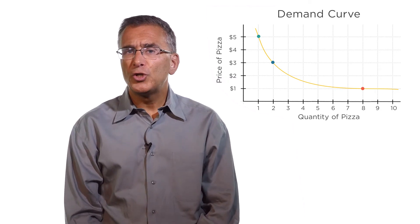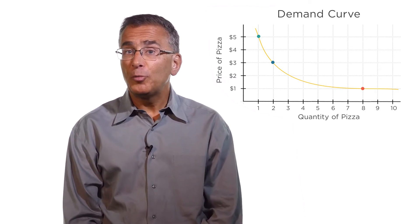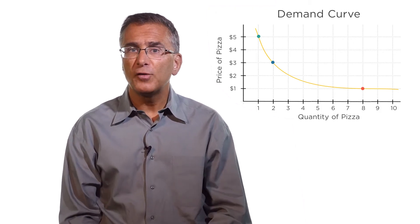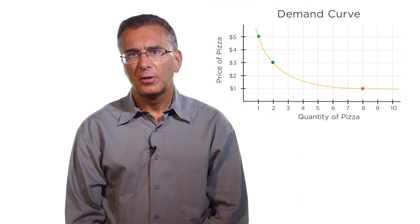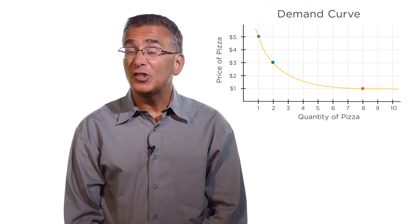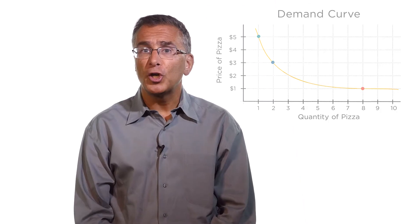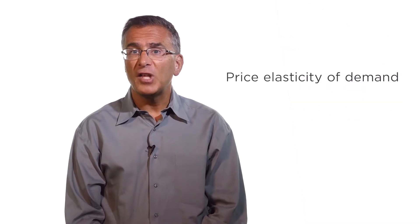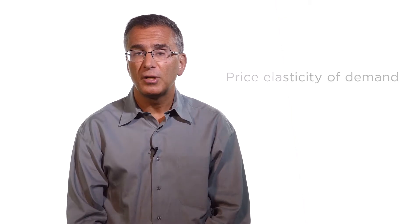In the last lecture, we drew the demand curve and talked about its shape. It slopes downward because of the law of demand — when the price of a good goes up, the quantity demanded goes down. We also talked about how demand curves can slope down steeply or more gently. This is determined by the price elasticity of demand, or how sensitive the quantity demanded is to a change in the price of a good.